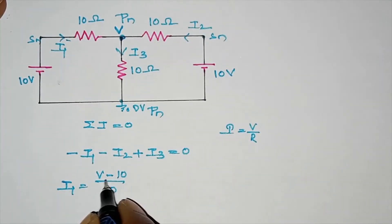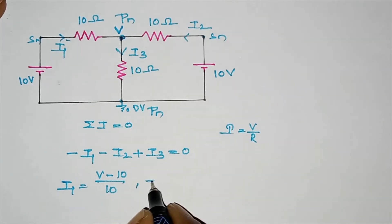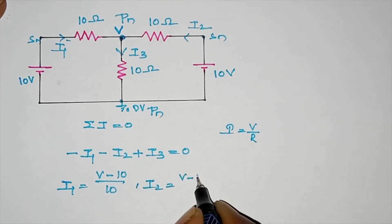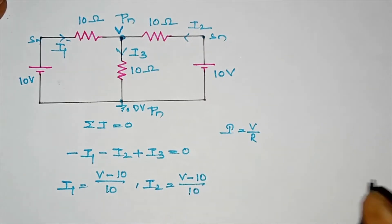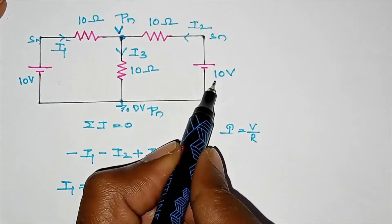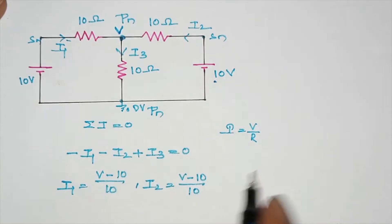I1 equals V minus 10V by 10Ω. I2 equals V minus 10 by 10.